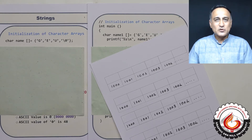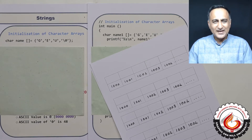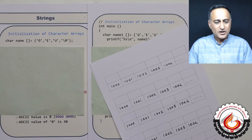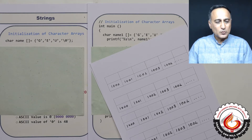That is why what C does is when a name ends, it terminates it with a special character called the null character. First, let's take a look at the very fundamental concept of character arrays by giving them initial values.